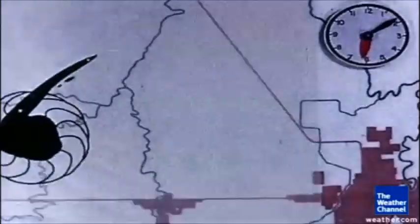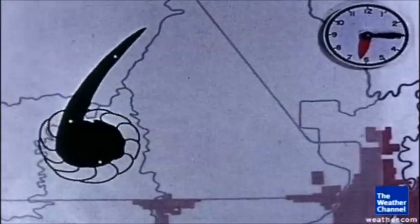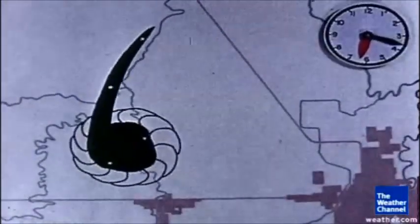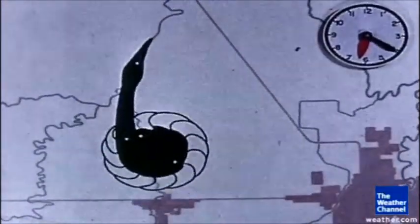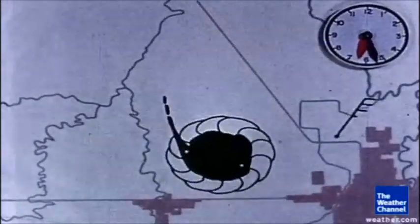Here you're seeing Fujita's hand-drawn graphic of the wall cloud — that black circle — and then the tail cloud that goes spiraling into the wall cloud. The tornadoes came down near the center of that wall cloud.